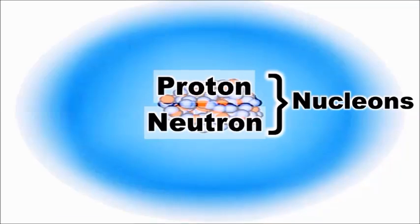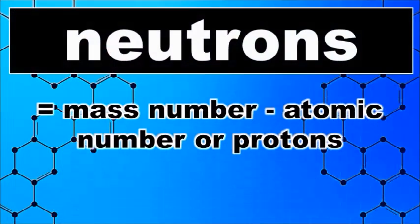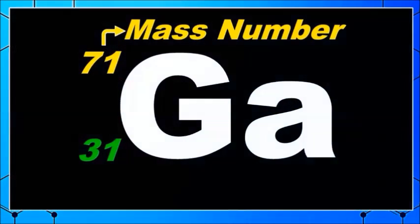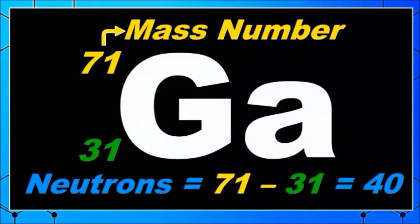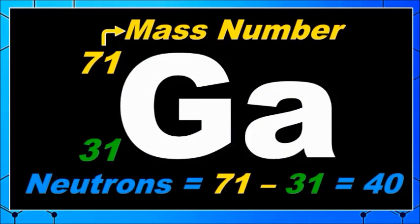Remember that the mass number is equal to the total number of protons and neutrons. Therefore, to find the number of neutrons, it is simply equal to the mass number minus the atomic number or the total number of protons. Gallium in the example has neutrons equal to 71 minus 31, which is equal to 40.